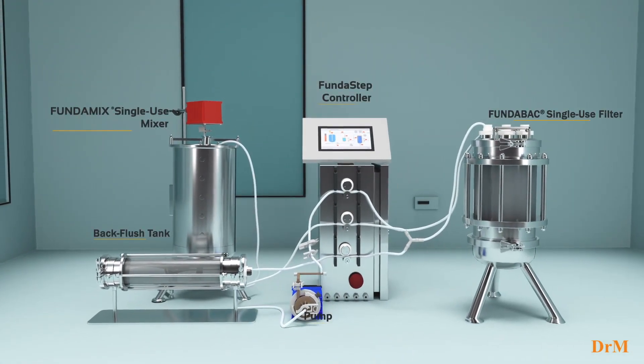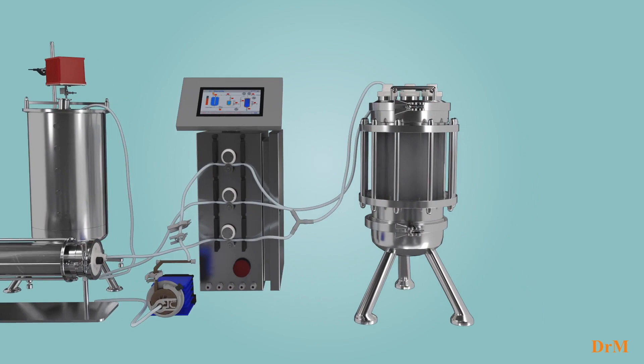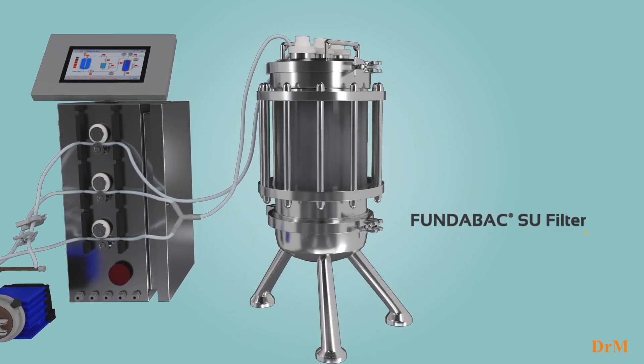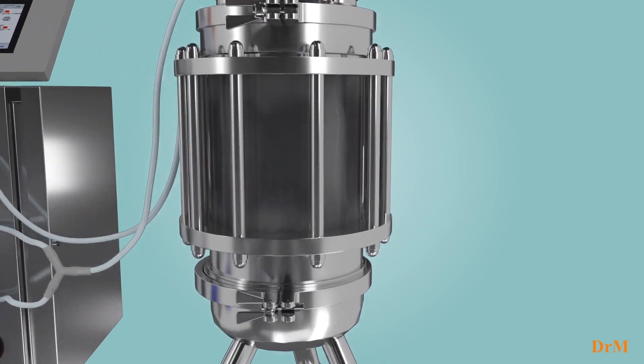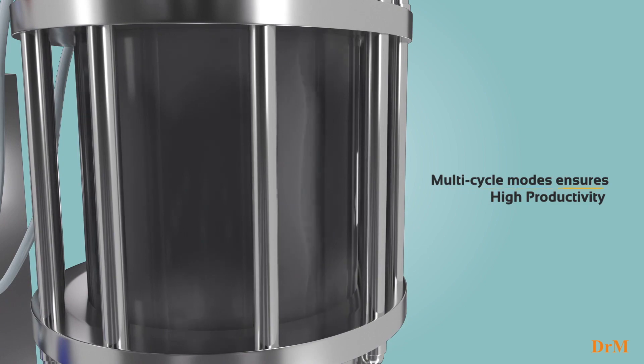Let's have a detailed look at the process and the specific advantages of the key components. The Fundaback SU filter consists of large surface filter elements packed into a fully contained plastic enclosure. The filter offers high productivity as a result of its multi-cycle filtration mode.